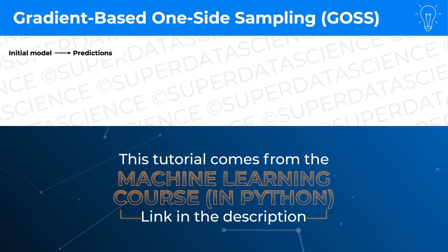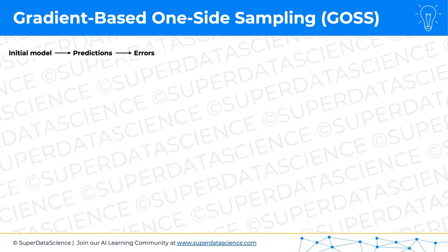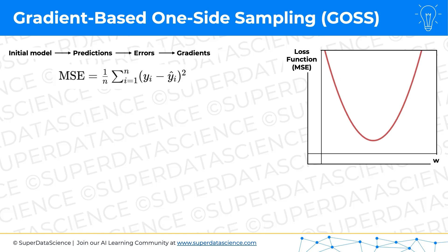We have this initial model — it's going to make some predictions — and then we're going to look at the errors. Those predictions and errors have gradients. For example, if using the mean squared error formula for our loss function, the loss function will look like this, illustrated for a simple linear regression scenario. On the x-axis we have a w parameter — the slope coefficient — and on the y-axis we have the loss function.